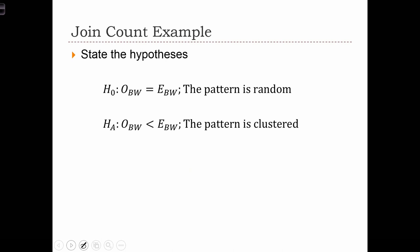The first step is to state the hypotheses. The null hypothesis is that the pattern is random, in which case O_BW would equal E_BW. The alternative hypothesis is that the pattern is clustered, in which case we would have a smaller number of observed black-white joins.